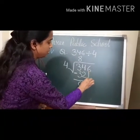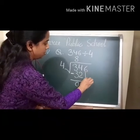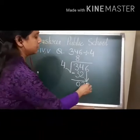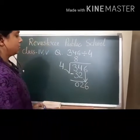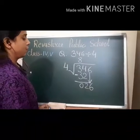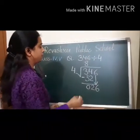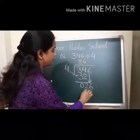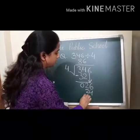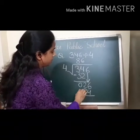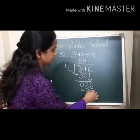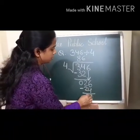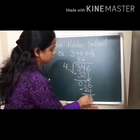Now, bringing it down — 6. 4 times 6 is 24. Minus. 6 minus 4 is 2. Here, 2 minus 2 is 0.